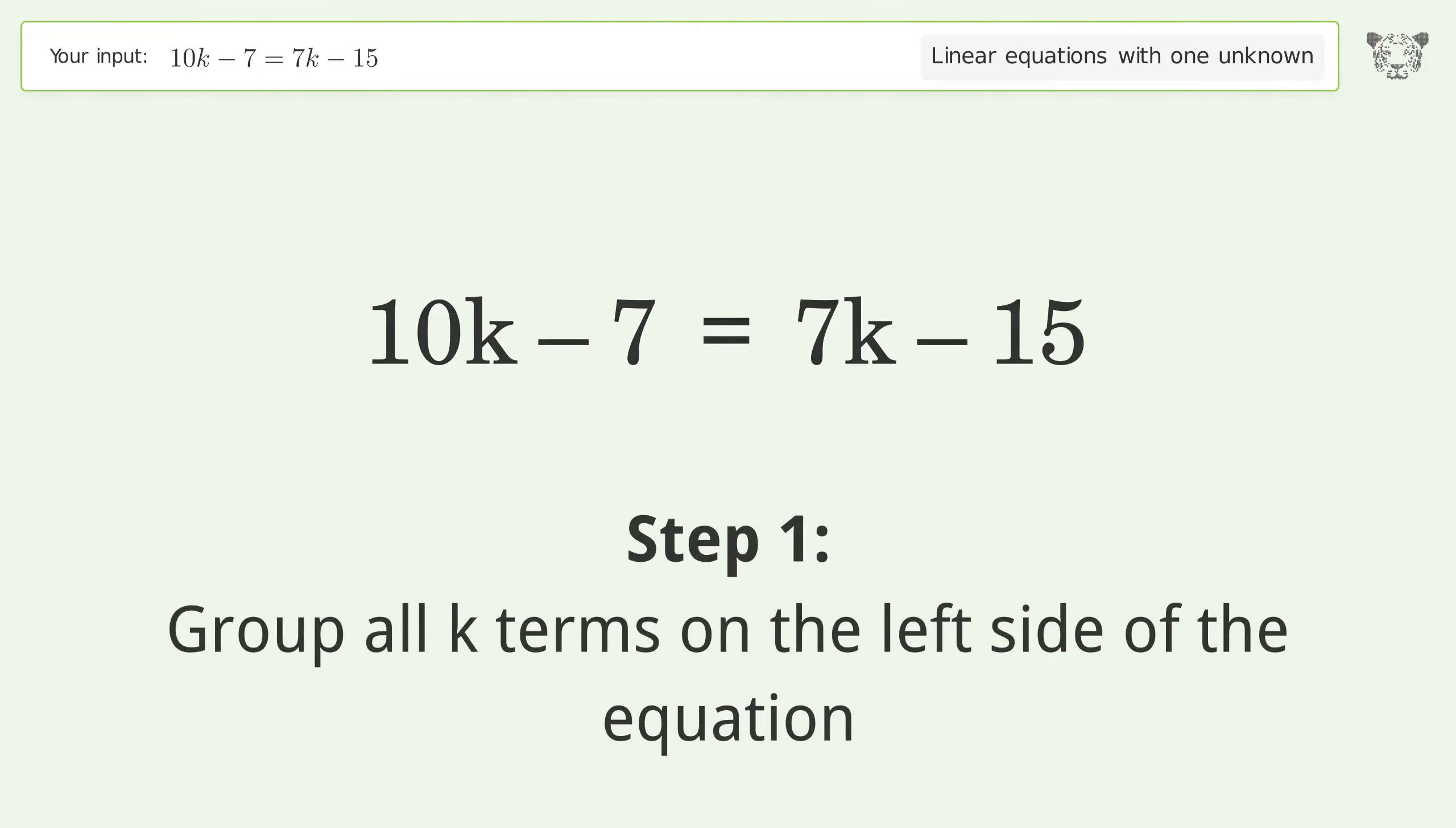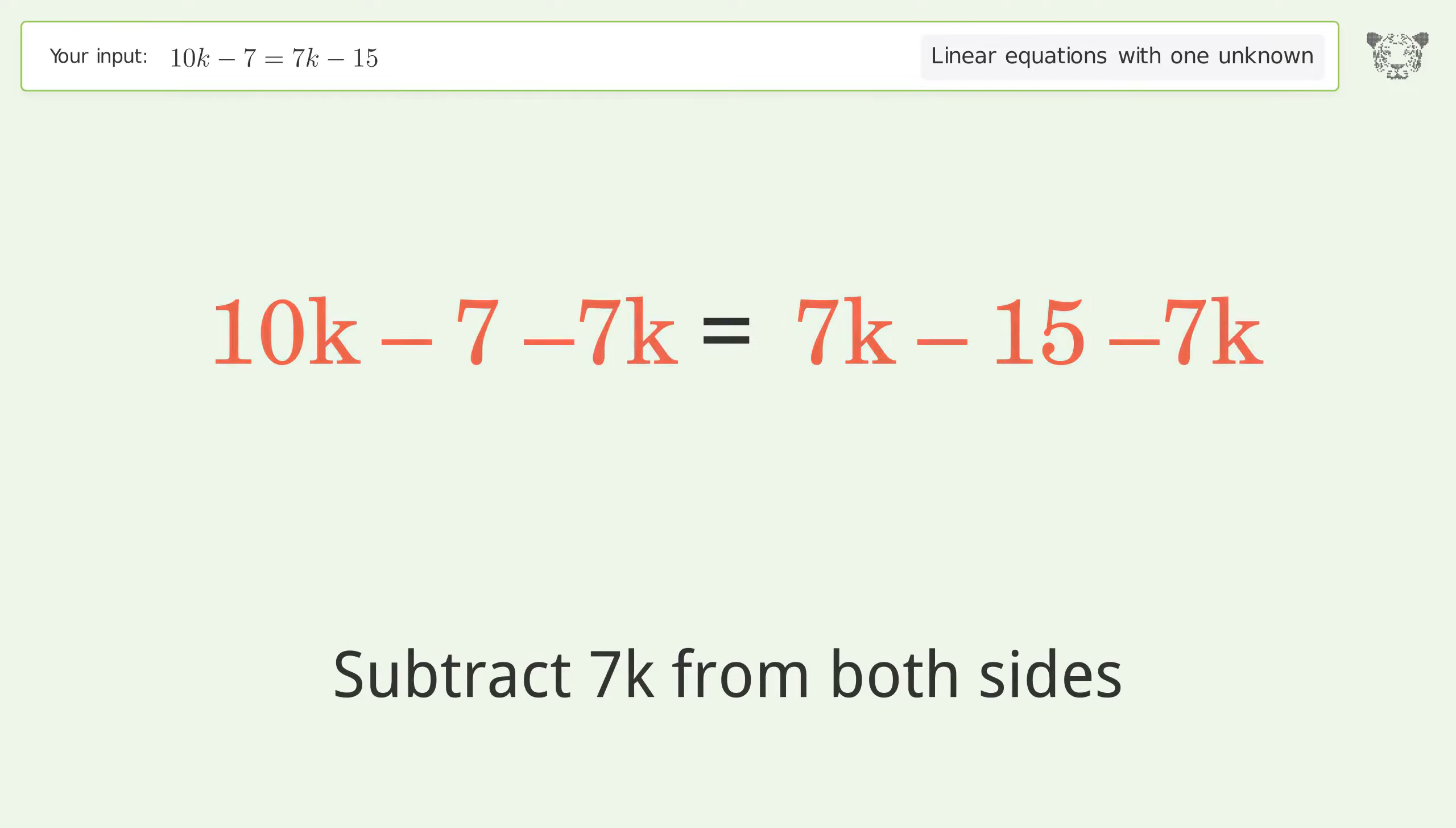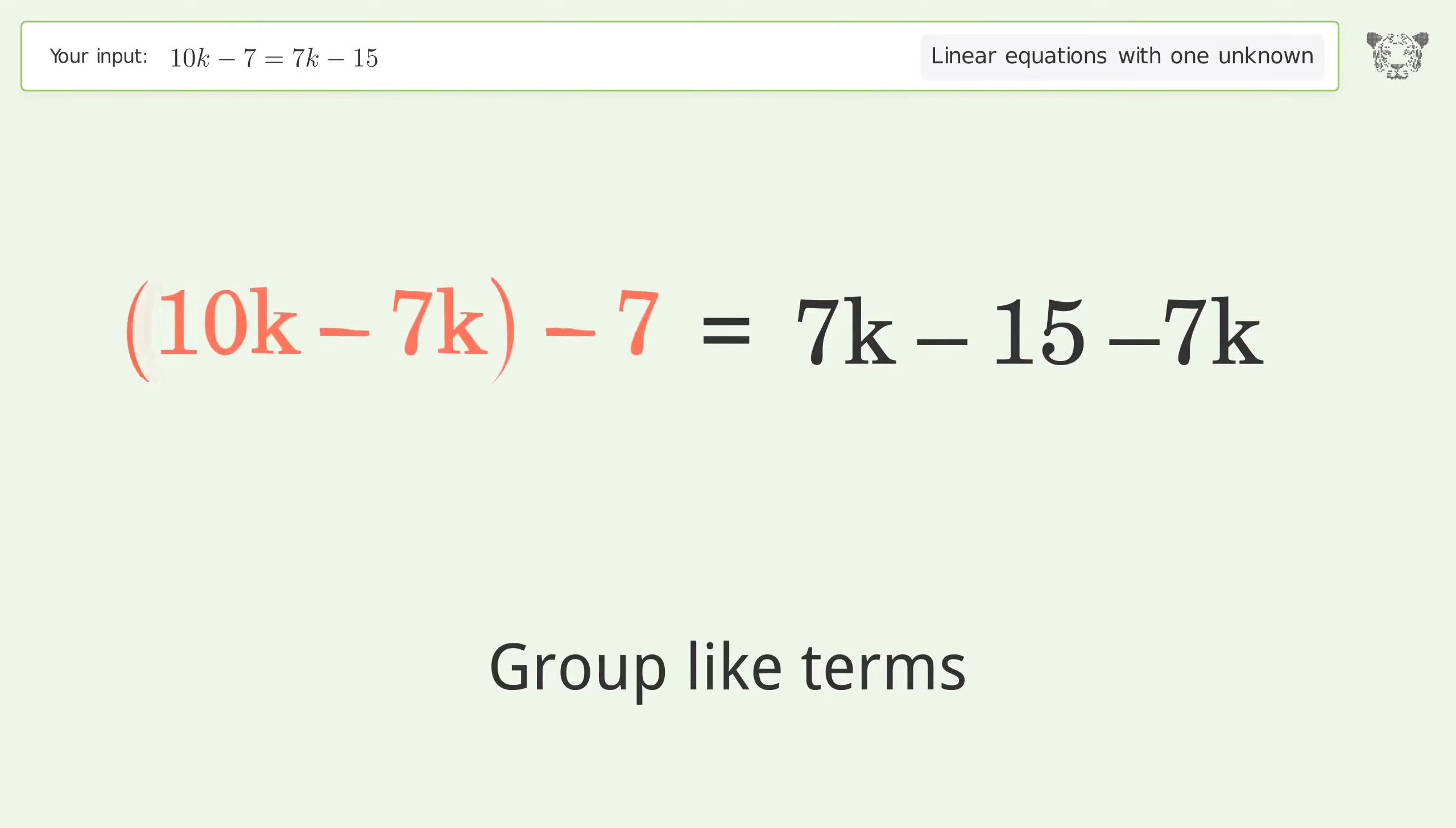Group all k terms on the left side of the equation. Subtract 7k from both sides. Group like terms. Simplify the arithmetic.